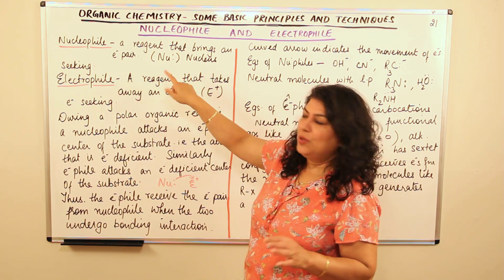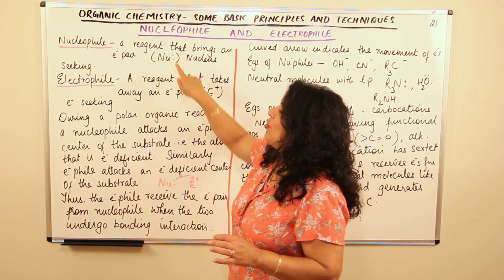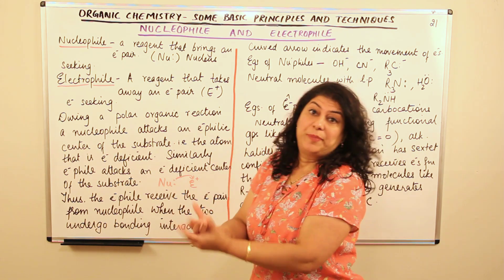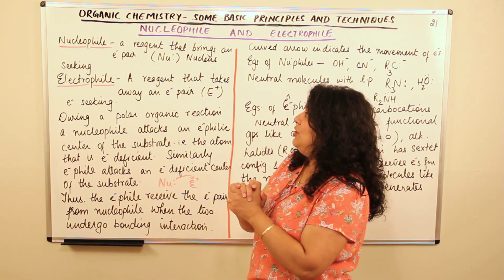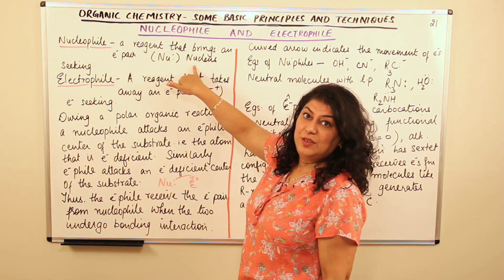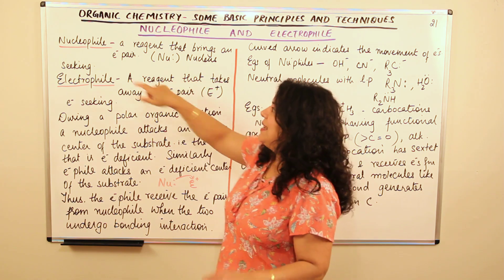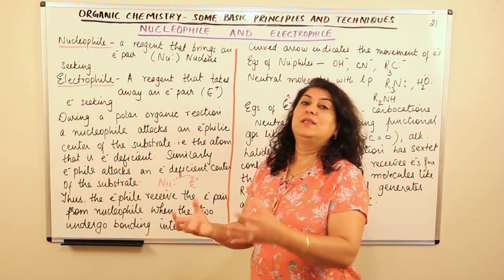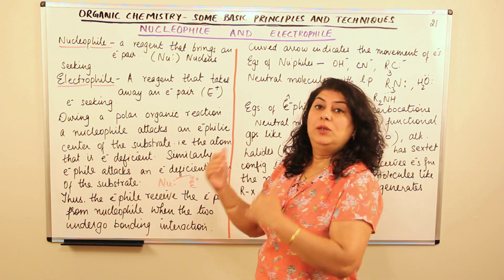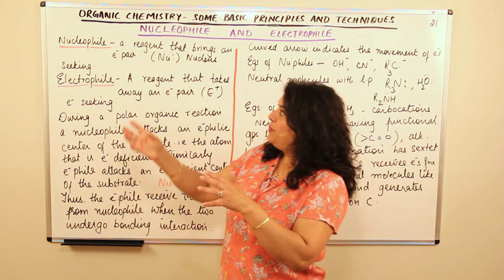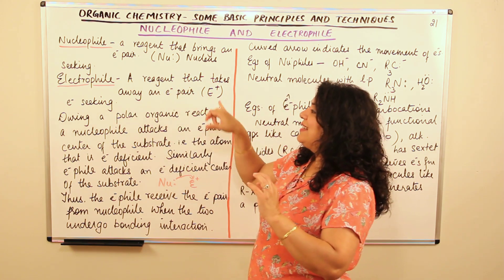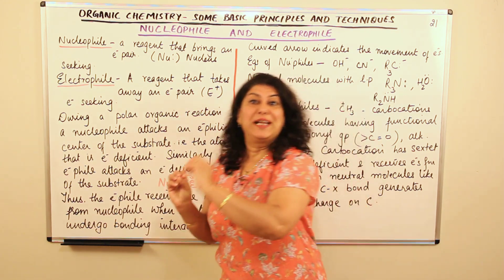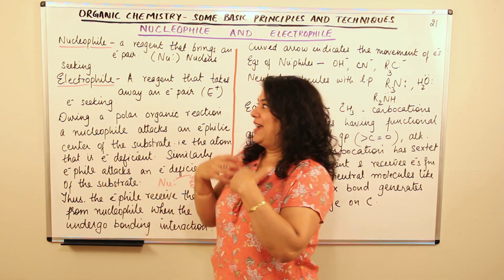Usually when we represent a nucleophile, we write it as Nu with a double dot. The double dot represents the electrons. It is rich in electrons. It can donate a pair of electrons and therefore it is known as the nucleophile. Nu stands for nucleus and 'phile' is loving or seeking — it goes looking for the nucleus, which in other words is positive charge. On the other hand, an electrophile would be a reagent that takes away an electron pair. It would be the opposite of nucleophile. It is attracted to the electron — it is attracted to the negative charge. 'Phile' is loving, so it is seeking negative charge.